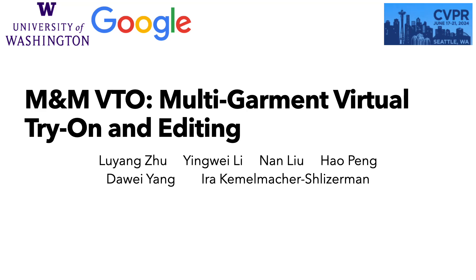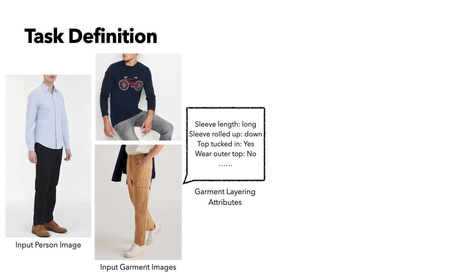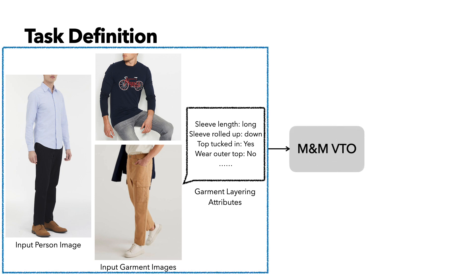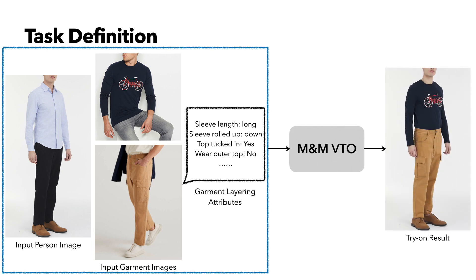Hi, I'm Lu Yang. I will be presenting Mix and Match VTO, Multi-Garment Virtual Try-On and Editing. The task definition of Mix and Match VTO is slightly different from the traditional one. The input consists of three parts: an input person image, multiple input garment images — for example a top garment and a bottom garment — and garment layering attributes describing how the garment should be laid out in the final try-on result. Given all these inputs, our Mix and Match VTO system will generate a try-on result of how these garments would look on the person, following the input garment layering attributes.